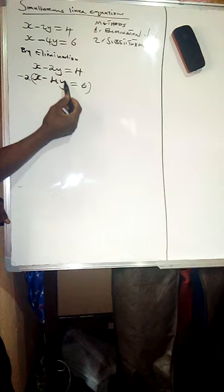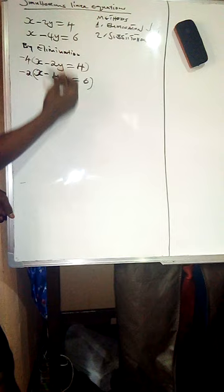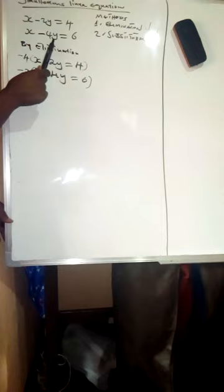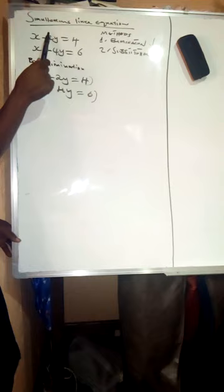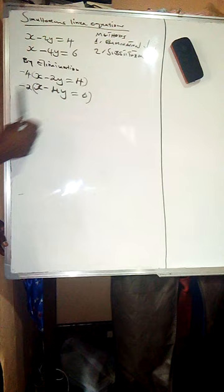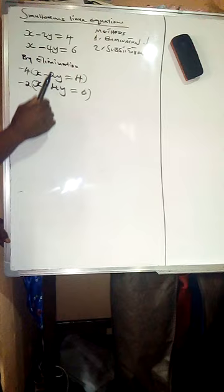The coefficient of y in the second equation, which is negative 4, multiplies the entire first equation. We are doing this because the coefficients of the y variables are different — we have negative 2 and negative 4. For us to eliminate the y variables, we need the same coefficients before adding or subtracting. So we equalize and balance the two equations first.